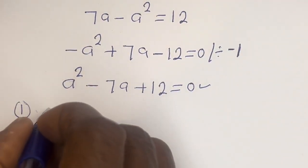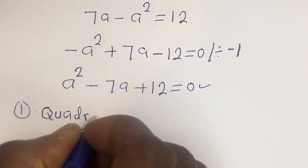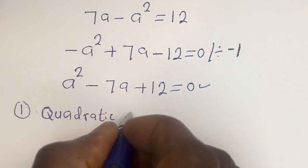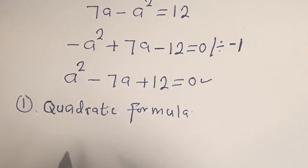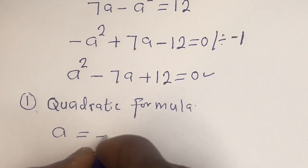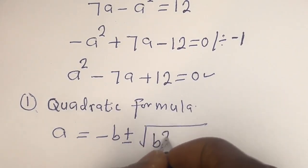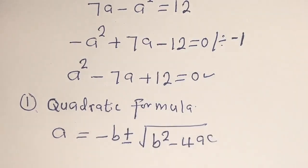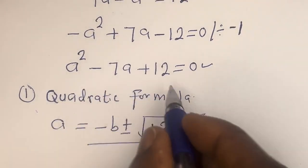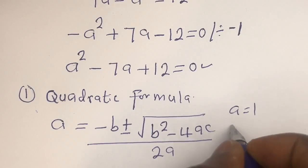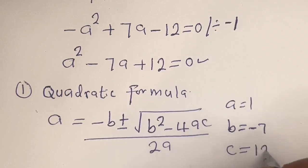Let's use the quadratic formula first. We have a equals minus b plus or minus square root of (b squared minus 4ac), all divided by 2a. From our equation, the coefficient a is equal to 1, b is equal to minus 7, and c is equal to 12.